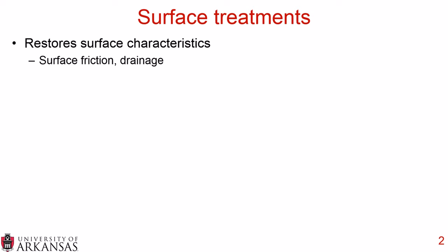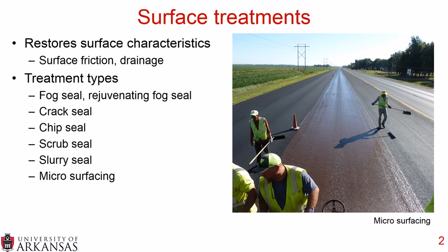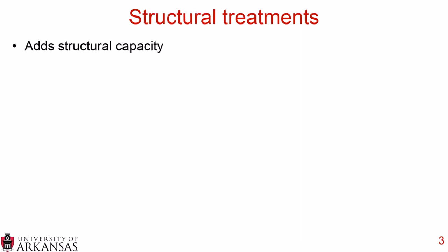There are two types of applications. The first is surface treatments, and these restore surface characteristics such as surface friction and drainage. There are various treatment types including fog seals and rejuvenating fog seals, crack seals, chip seals and scrub seals, slurry seal and microsurfacing, cape seals which is a chip seal plus a slurry seal, and ultra thin bonded overlays. It is important to note that these surface treatments do not address structural issues. Structural issues can be addressed with structural treatments, and these add structural capacity.